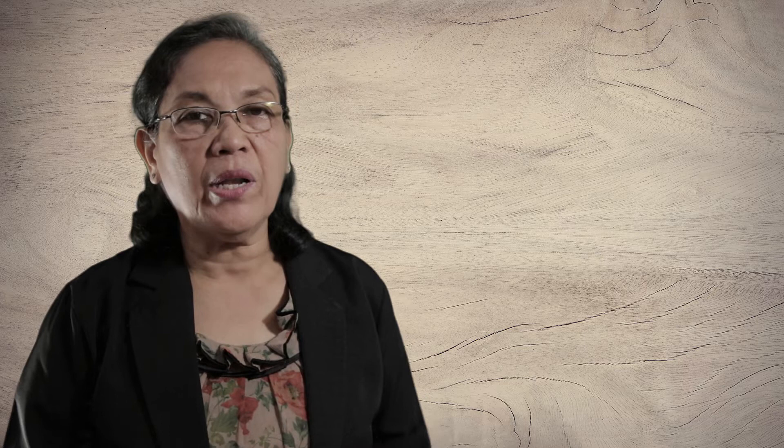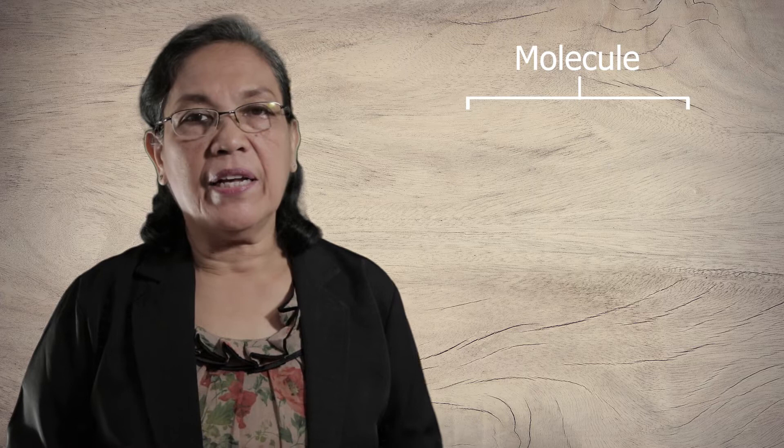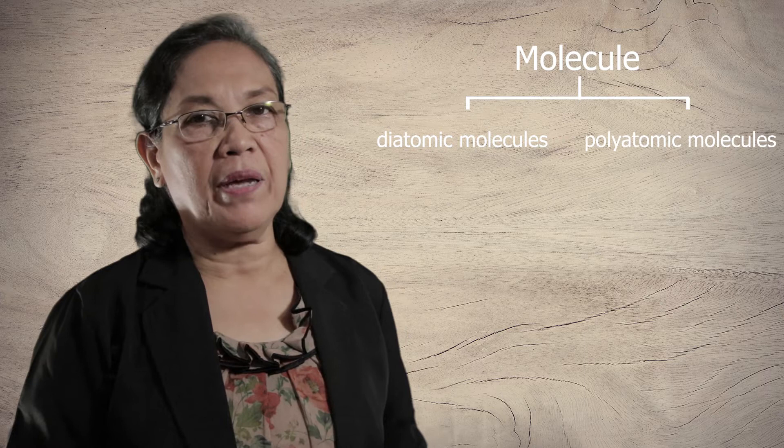So that is all about the ions. Let's go to what a molecule is. A molecule is composed of two atoms chemically bonded together. There are kinds of molecules: the diatomic molecule and the polyatomic molecule.